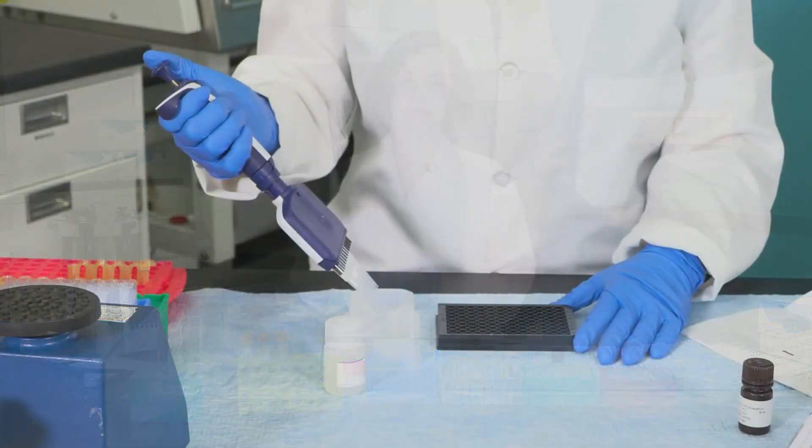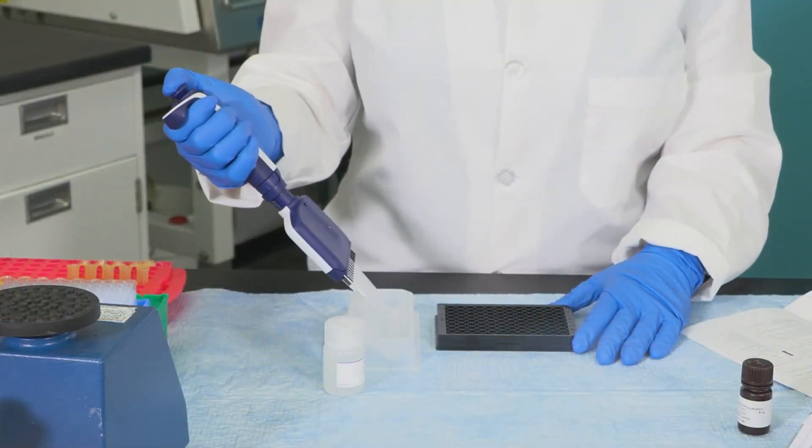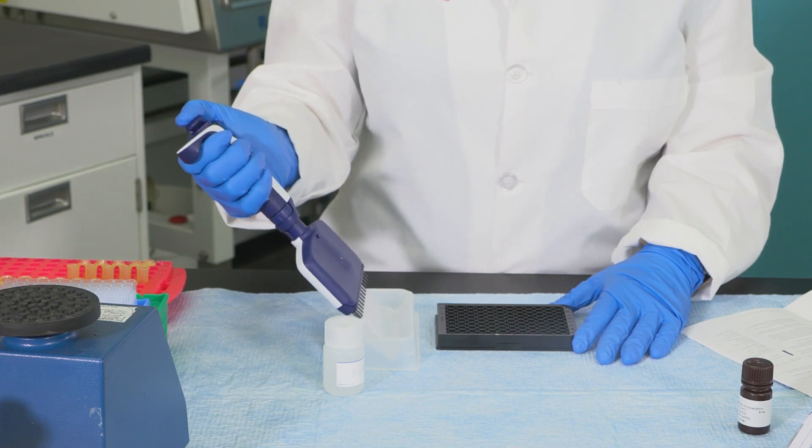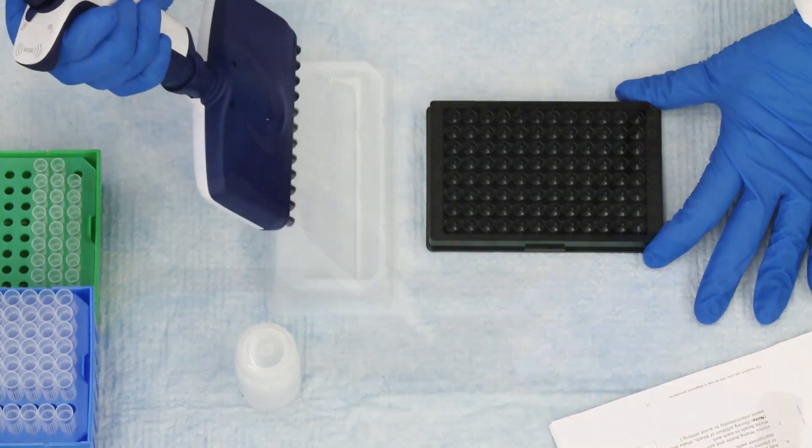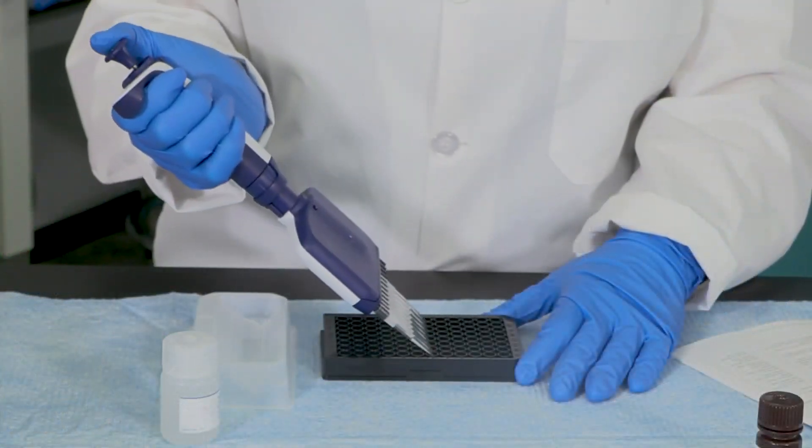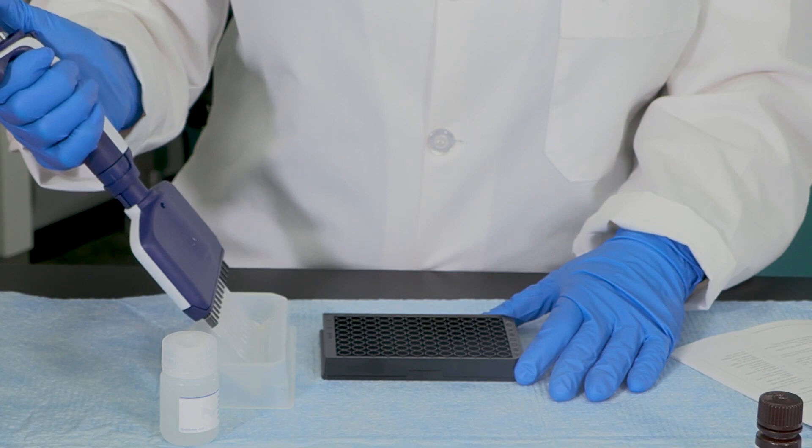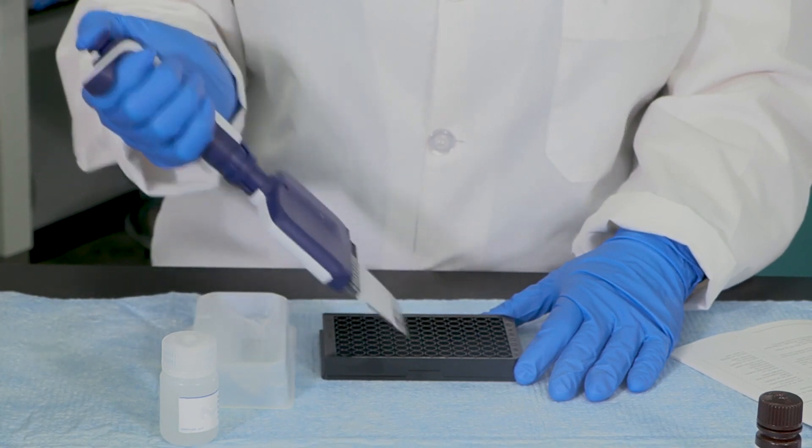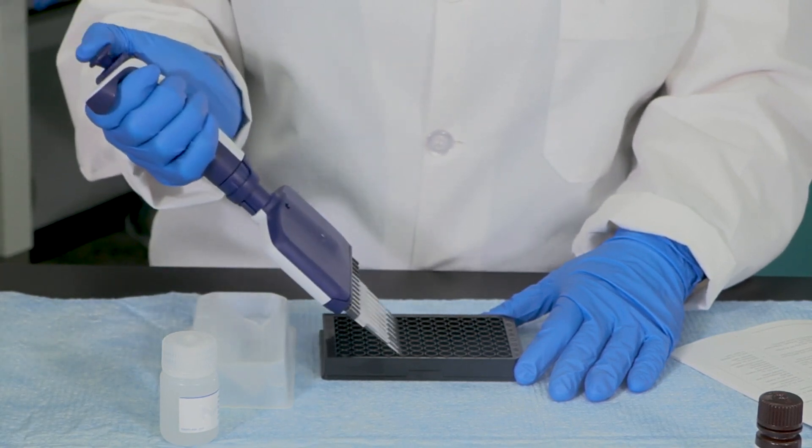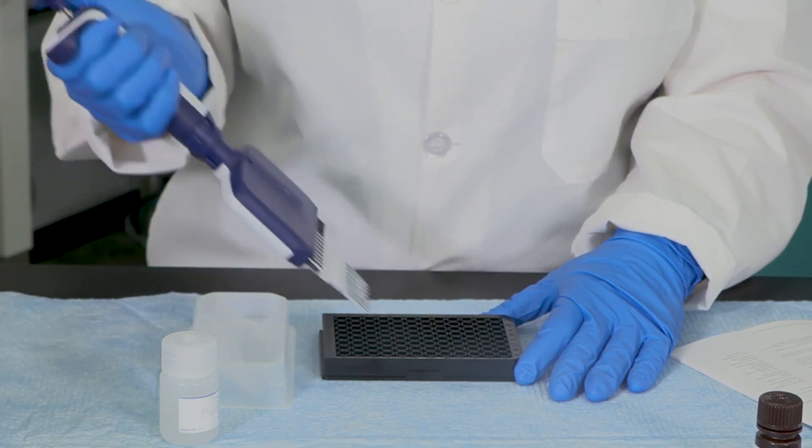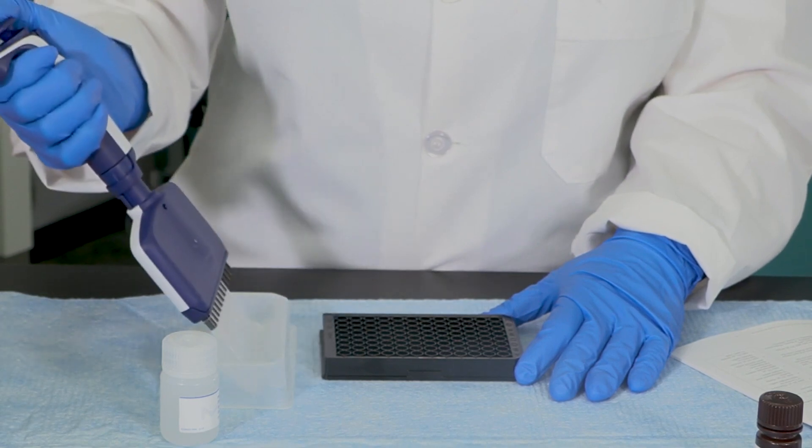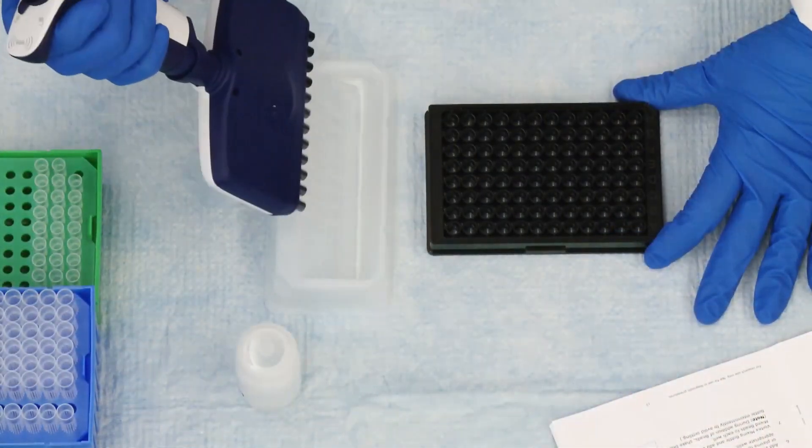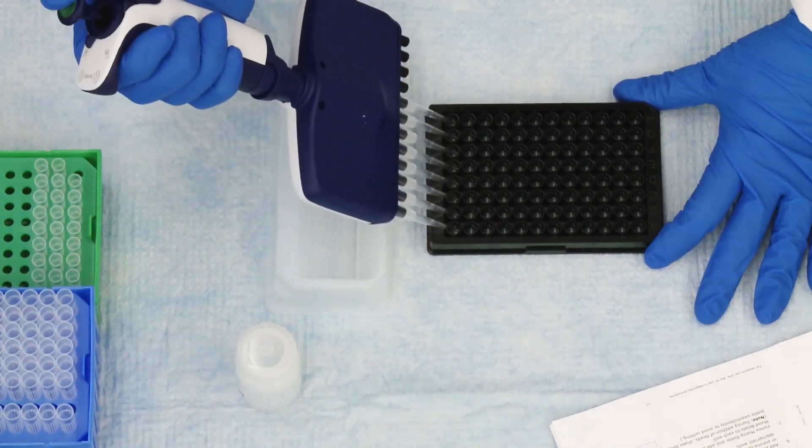Use reverse pipetting for more accurate dispensing. Begin by depressing the plunger past stop one and aspirate the liquid. To dispense the liquid, touch the tip against the well wall and push the plunger only to the first stop to dispense the intended volume. Do not go past the first stop, as the residual liquid in the tip is the difference between the original aspirated volume and the desired volume required in the well. From there, the same sequence can be used to aspirate and deliver liquid to additional wells using the same set of pipette tips.